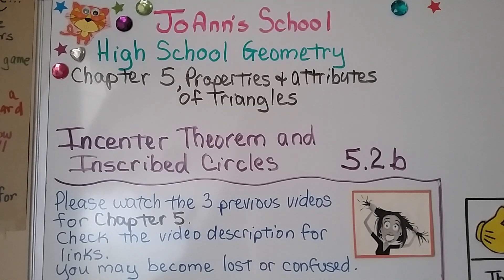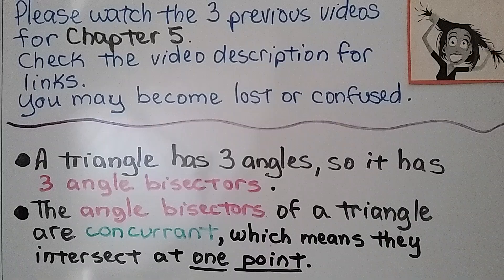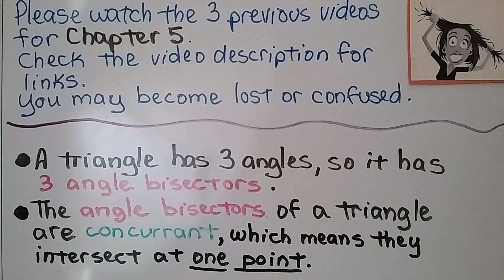Lesson 5.2b: In-Center Theorem and Inscribed Circles. We're also going to talk about angle bisectors. A triangle has three angles, so it has three angle bisectors. The angle bisectors of a triangle are concurrent, which means they intersect at one point.